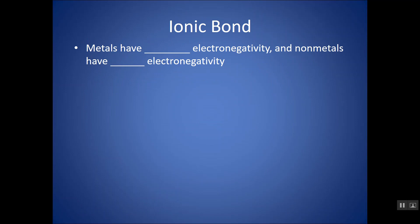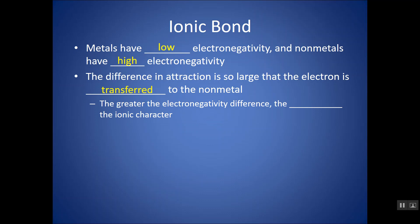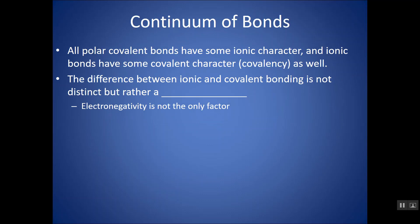Looking at an ionic bond, which is typically between metals and non-metals: metals have low electronegativity and non-metals have high electronegativity. Non-metals have such a larger electronegativity than the metals that they actually steal the electron from the metal — electrons transfer to the non-metal. The greater the electronegativity difference between the metal and non-metal, the greater the ionic character. We don't say it's more polar because it's not a covalent bond. All polar covalent bonds have some ionic character, and ionic bonds have some covalent character — so the difference is a continuum, not distinct.